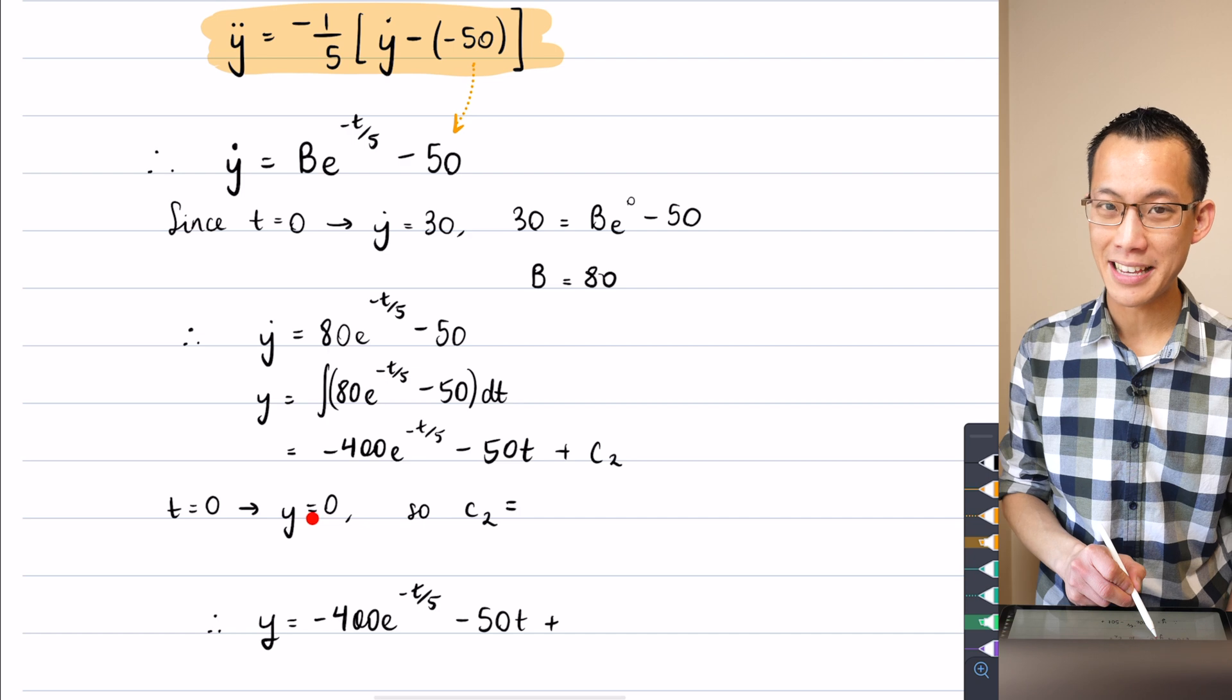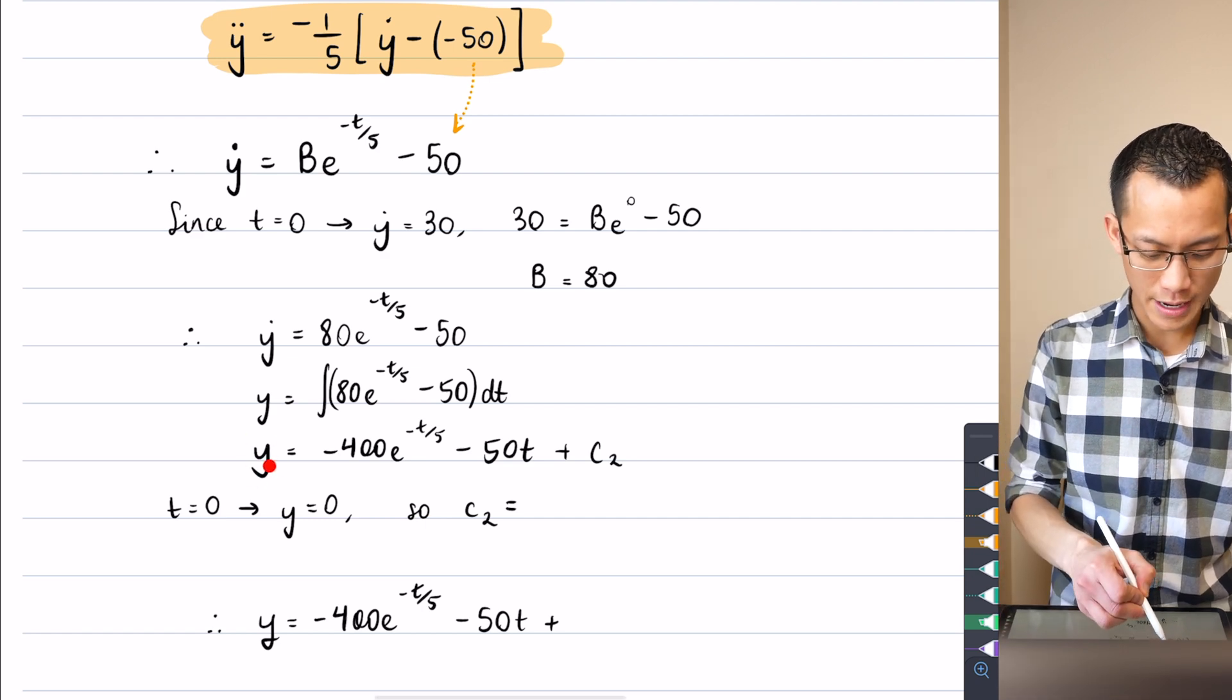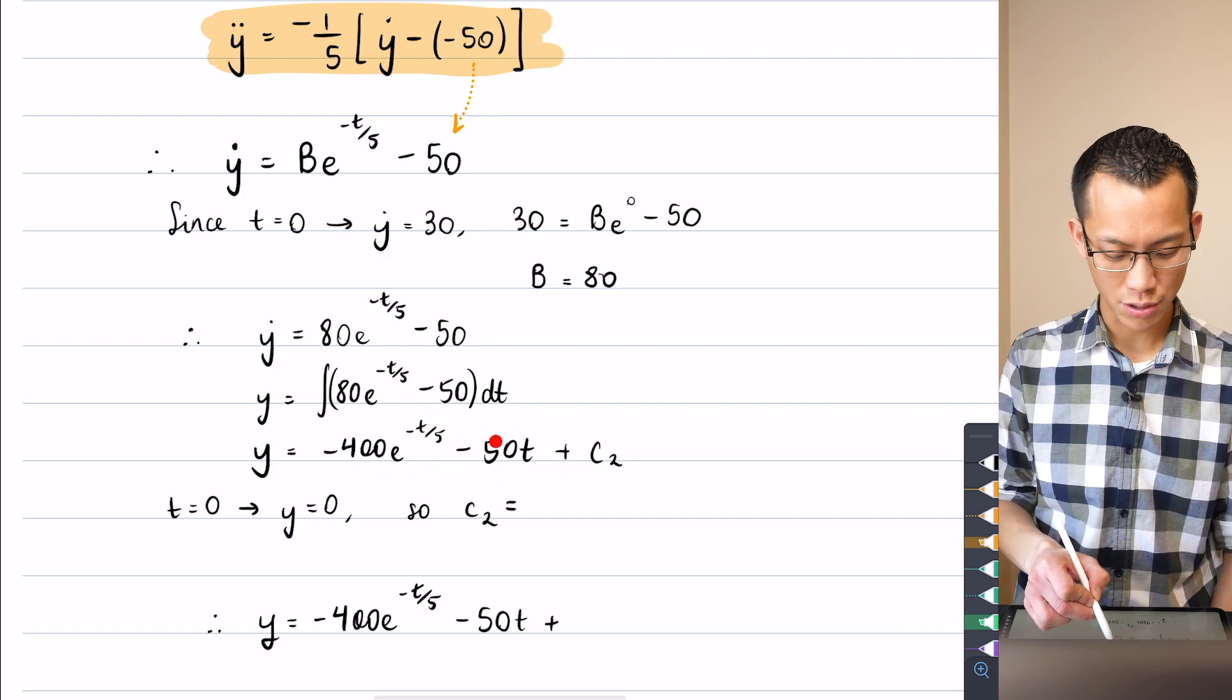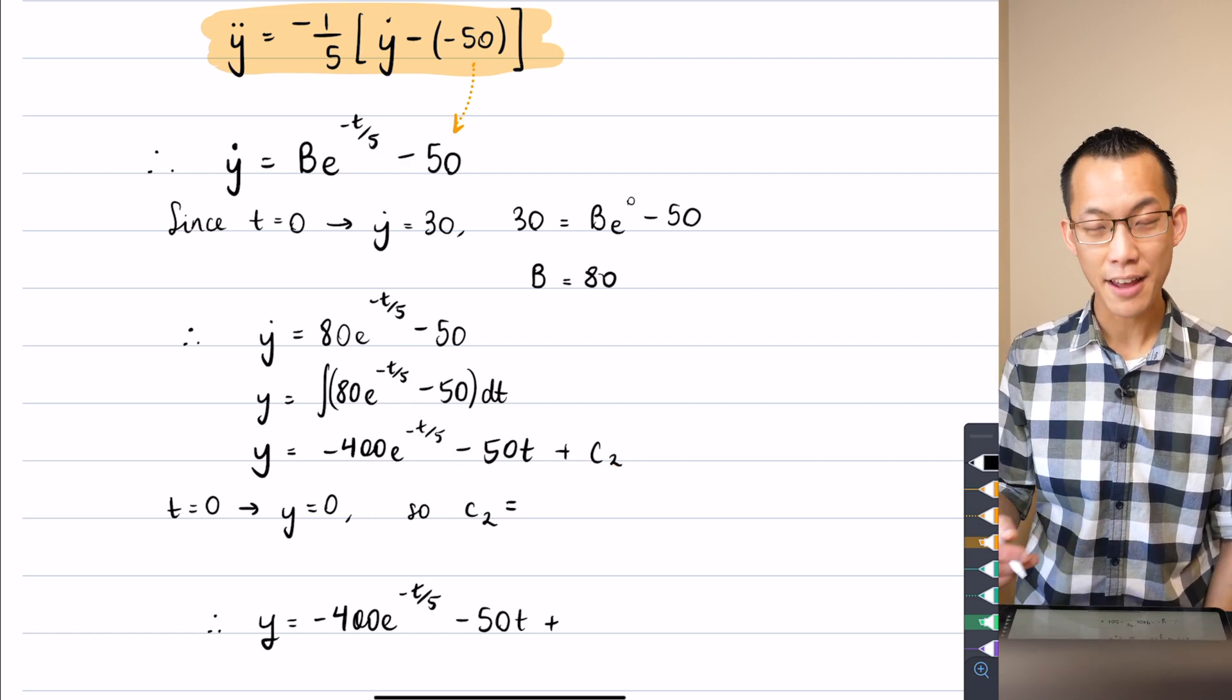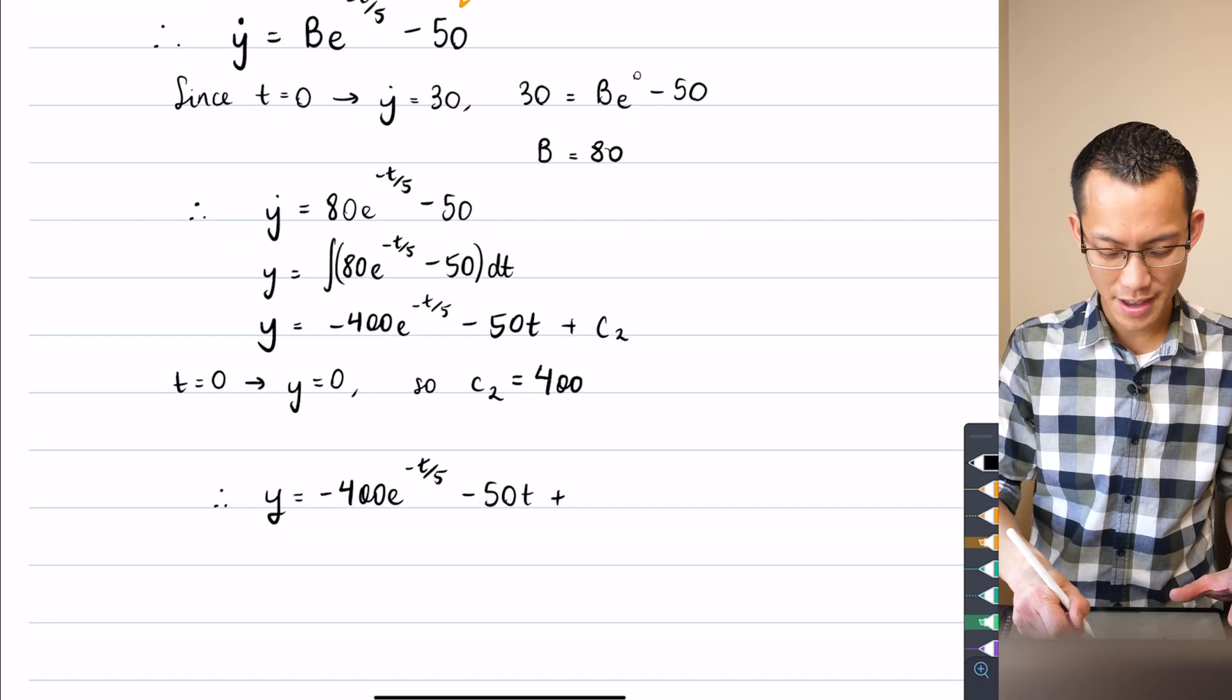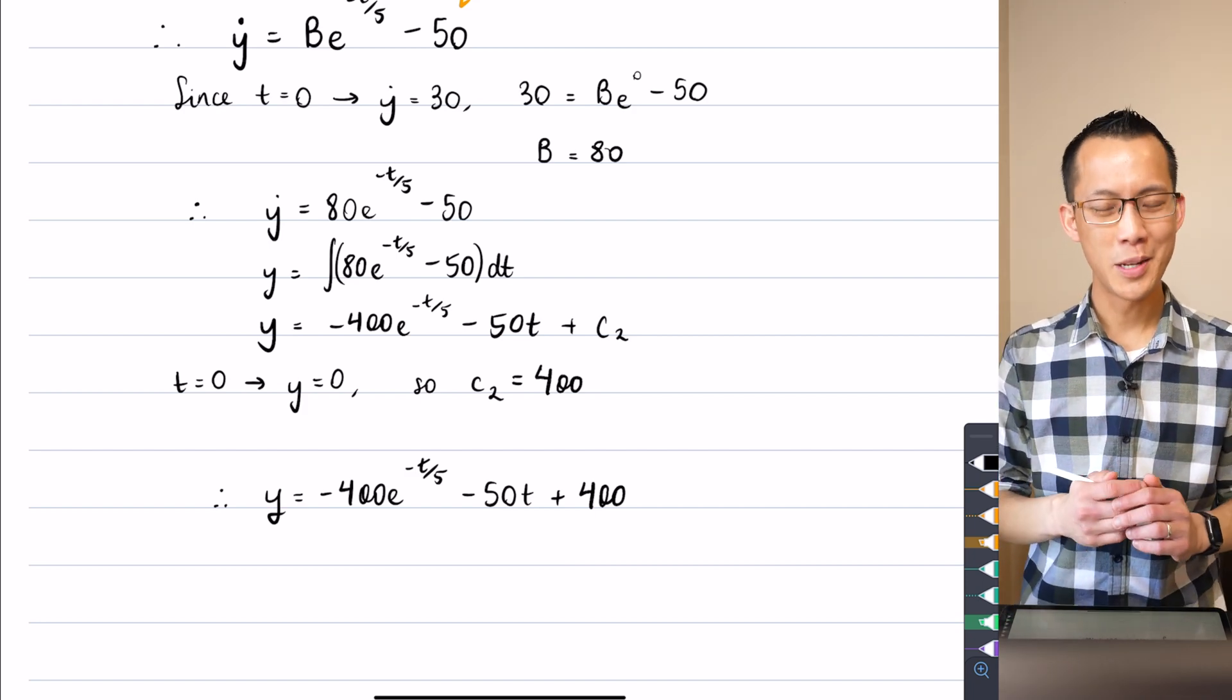But we can actually still work with it because when you put in T equals zero, we define the origin as our point where we were firing the projectile from. So if you have a careful look here, you're going to get zero over here. This term is going to become one. So you get a negative 400. This term is also going to become zero. So you've got the negative 400 and the constant over here. So if you add 400 to both sides, that will give you constant two. And I had to name it separately because of my other constant up above. So there you go. There is my equation, my parametric equation for vertical displacement with respect to time.